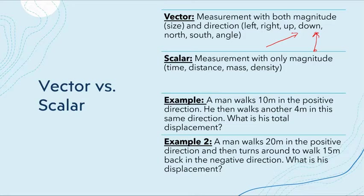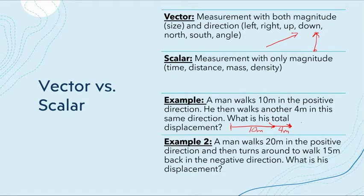An example of a vector: a man walks 10 meters in the positive direction, then walks another 4 meters in the same direction. What is his total displacement? You add those together — going from the tail of the first vector to the head of the final one — giving you 14 meters in the same direction, drawn to the right.